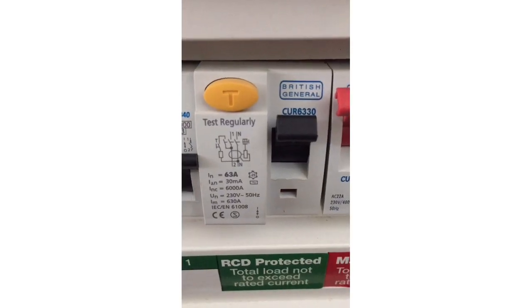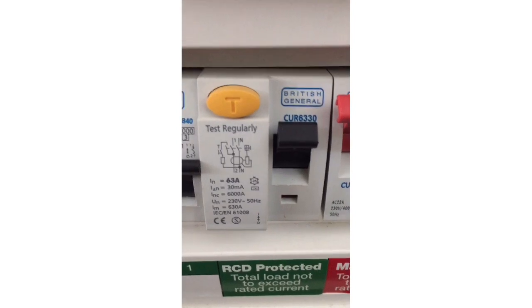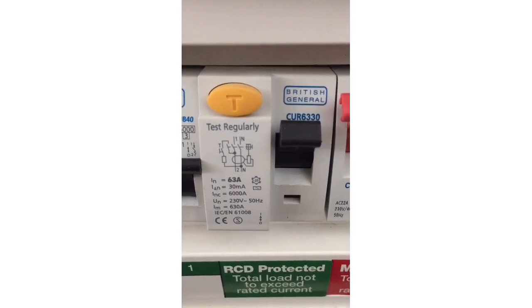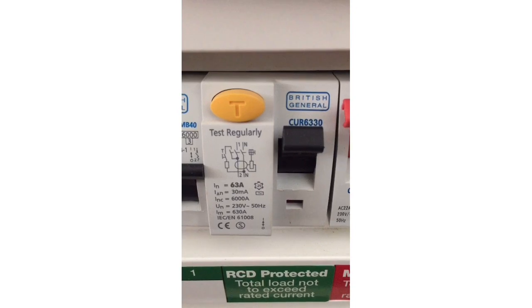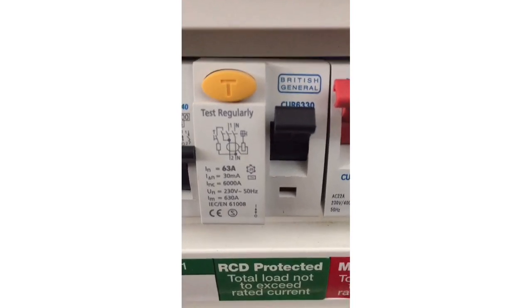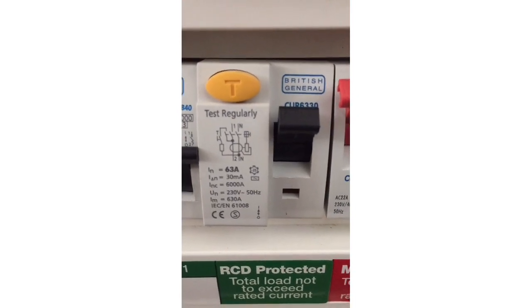This is the RCD in question, and you should be able to see there that the I delta N value, I triangle N, and the rating of the device is 30 milliamps. So when we talk about a 30 milliamp RCD, that's one there.